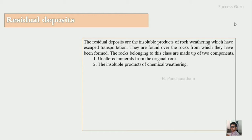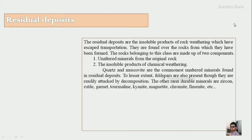This simply implies that the rock exposed to the atmosphere has been weathered by geomorphic agents, has not been transported from that location, and forms the residual deposit. Rocks belonging to this class are made up of two components: unaltered minerals from the original rock, and the insoluble products of chemical weathering.